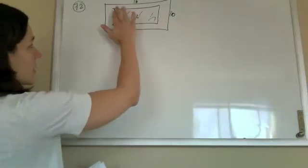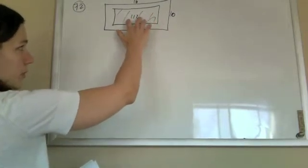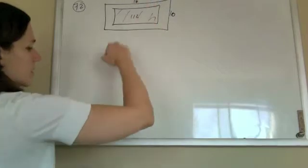I've labeled everything they've given us. The outer dimensions are 16 and 10. The area of the pool alone is 112, and each one of these widths is x.